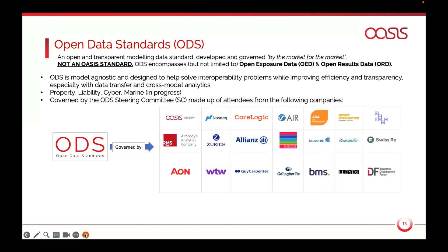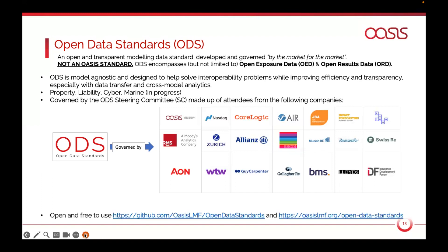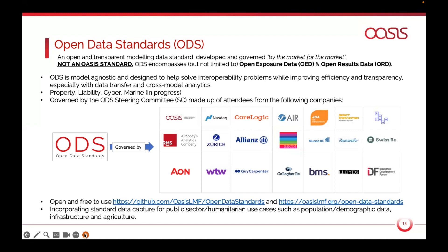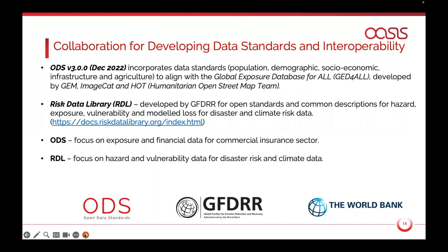We encourage the community to send us feedback and ideas on what should go into the standard — that's how the committee works, how the standard develops, and how new versions come out. The links are available for download on GitHub, completely free. We're now trying to incorporate more public sector and humanitarian use cases, looking at population information, demographic data, infrastructure, and agriculture. ODS version 3, released at the end of last year, now incorporates population, demographic, and socioeconomic information, aligning with the JED for All database developed by GEM, ImageCat, and HOT.